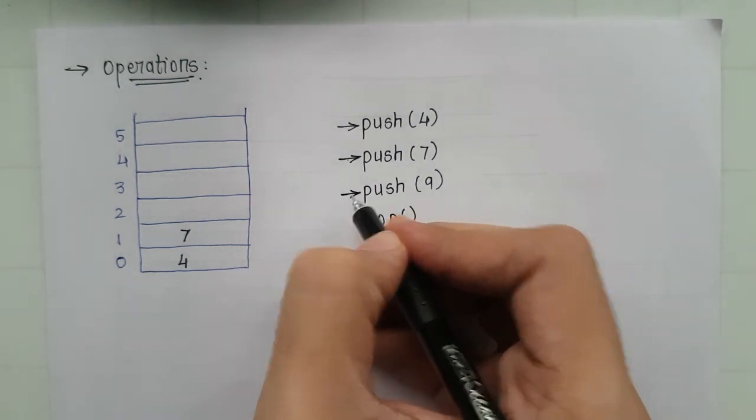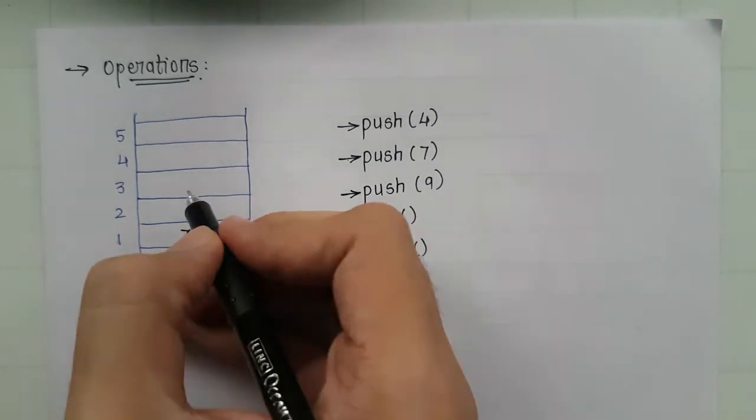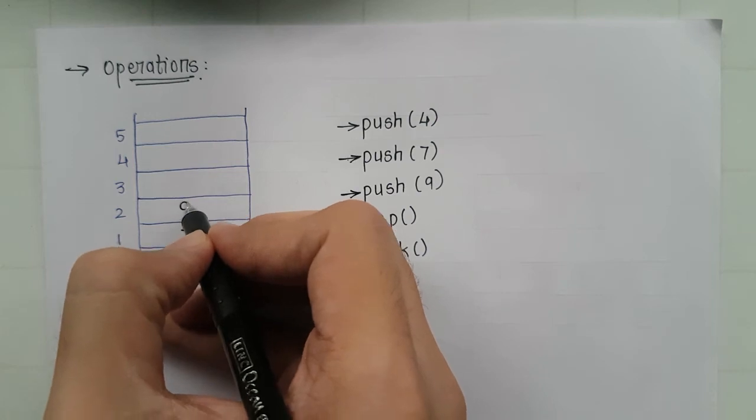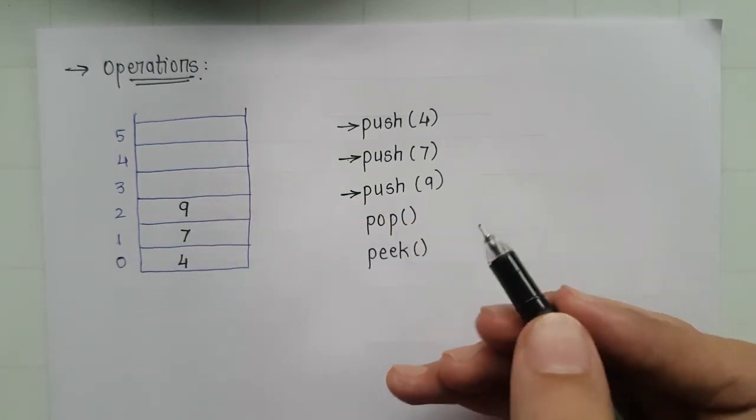So it would insert 9 on the second index.